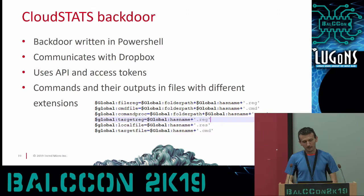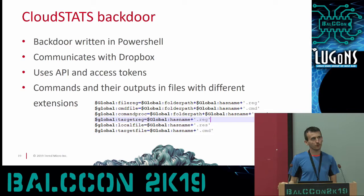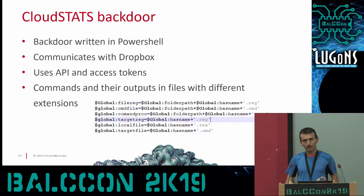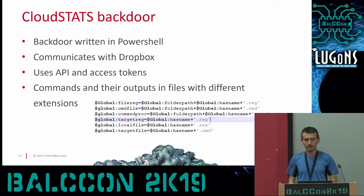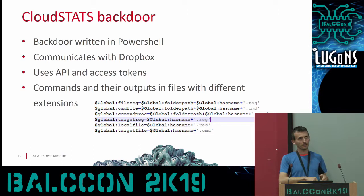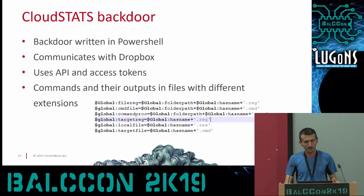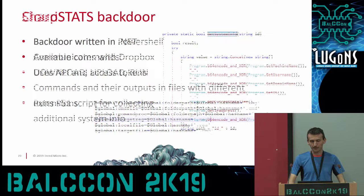After the first backdoor, we noticed a different backdoor called CloudStats, which was quite interesting because it uses Dropbox for communication. The attacker uploads a file to Dropbox, the backdoor downloads it, executes the command, and uploads the result back to Dropbox. Different file extensions are used: .rec for registration information sent from victim to C2; .cmd for commands the operator uploads for the victim machine to download and execute; and .ris for the result, uploaded back to the cloud. After reverse engineering you can obtain their API and access tokens and monitor what commands are there.